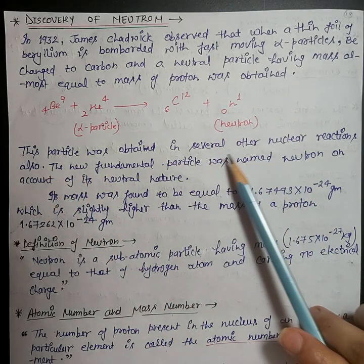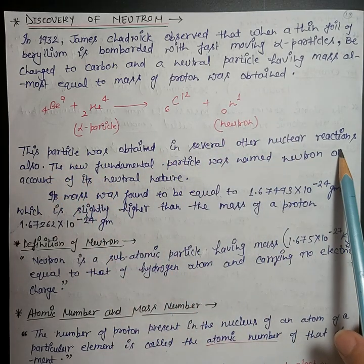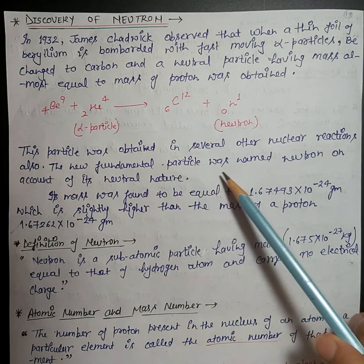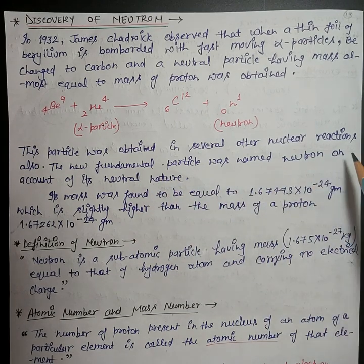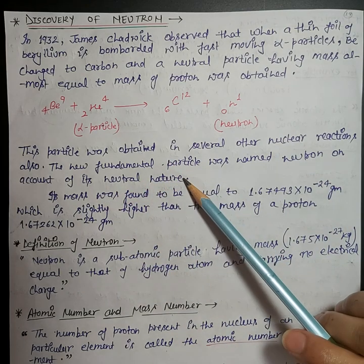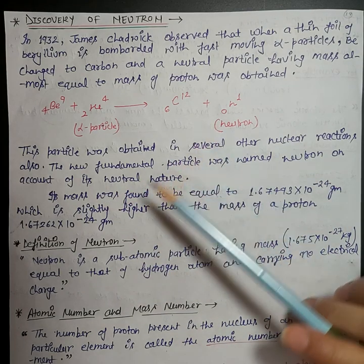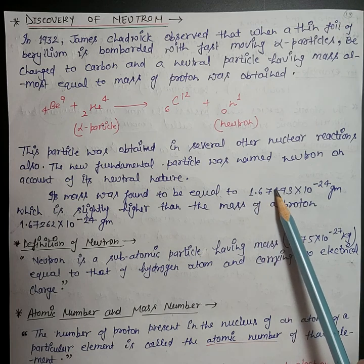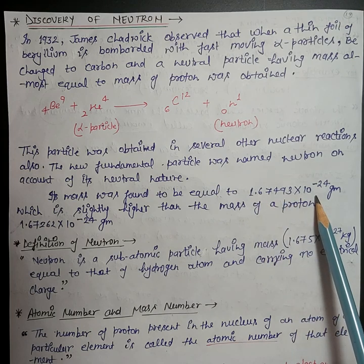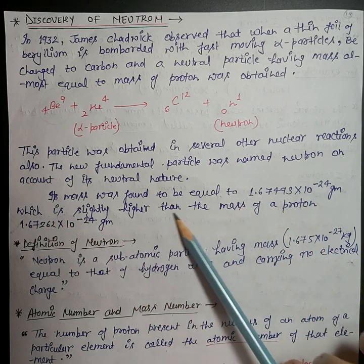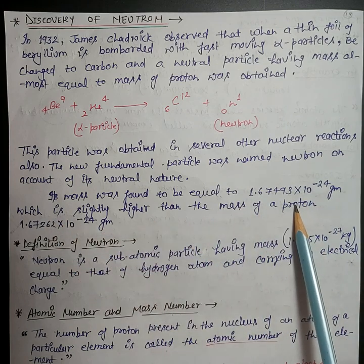This particle was obtained in several other nuclear reactions also. The new fundamental particle was named neutron by Chadwick on account of its neutral nature. Its mass was found to be equal to 1.67493 × 10⁻²⁴ gram, which is slightly higher than the mass of a proton.